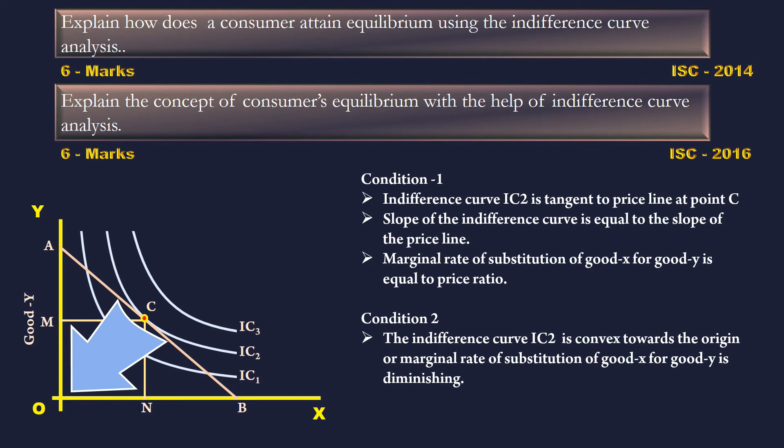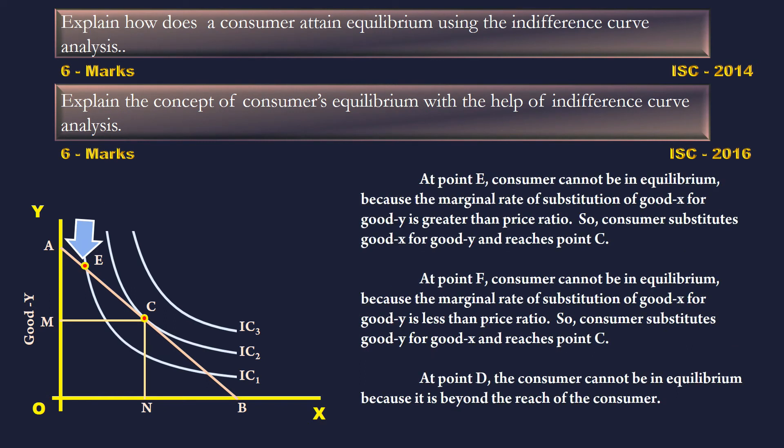Condition 2: The Indifference Curve IC2 is convex towards the origin. The Marginal Rate of Substitution of good X for good Y is diminishing. At point E, the consumer cannot be in equilibrium because the Marginal Rate of Substitution of good X for good Y is greater than the price ratio.